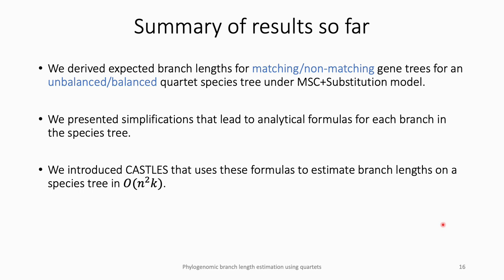To summarize the theoretical contribution: we derived expected branch lengths for gene trees that match or do not match a quartet species tree under this extension of the multi-species coalescent model. We presented simplifications that gave analytical formulas for each branch in a quartet. Finally, we introduced CASEL, which uses these quartet-based equations to estimate branch lengths in an arbitrarily large species tree.